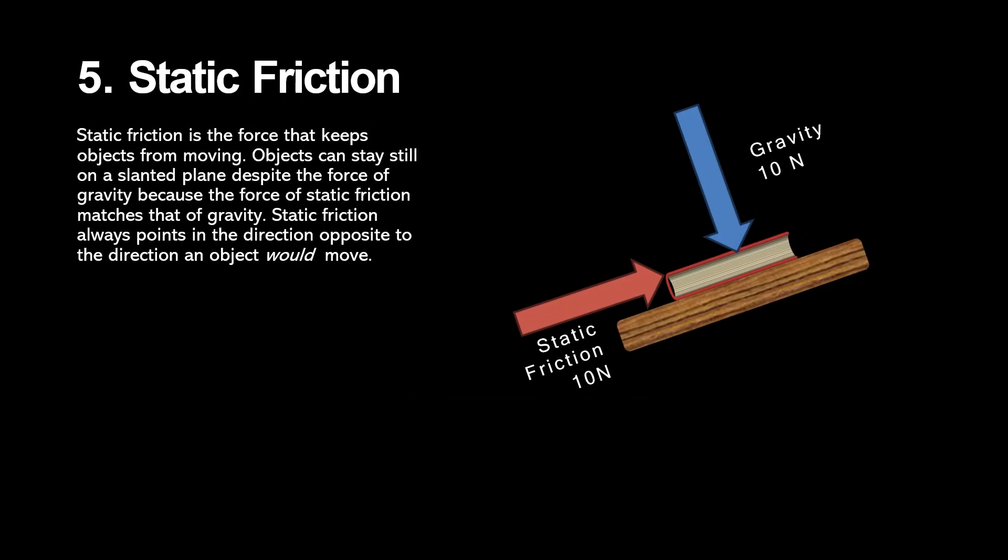Static friction, on the other hand, keeps an object from moving. Objects can stay still on slanted surfaces because the static friction balances the force that would otherwise cause the motion. One important thing to keep in mind when dealing with static friction is that it only matters if the two objects are stationary relative to each other. When a car drives down the street, there is static friction between the wheel surface and the road, which are stationary relative to each other.